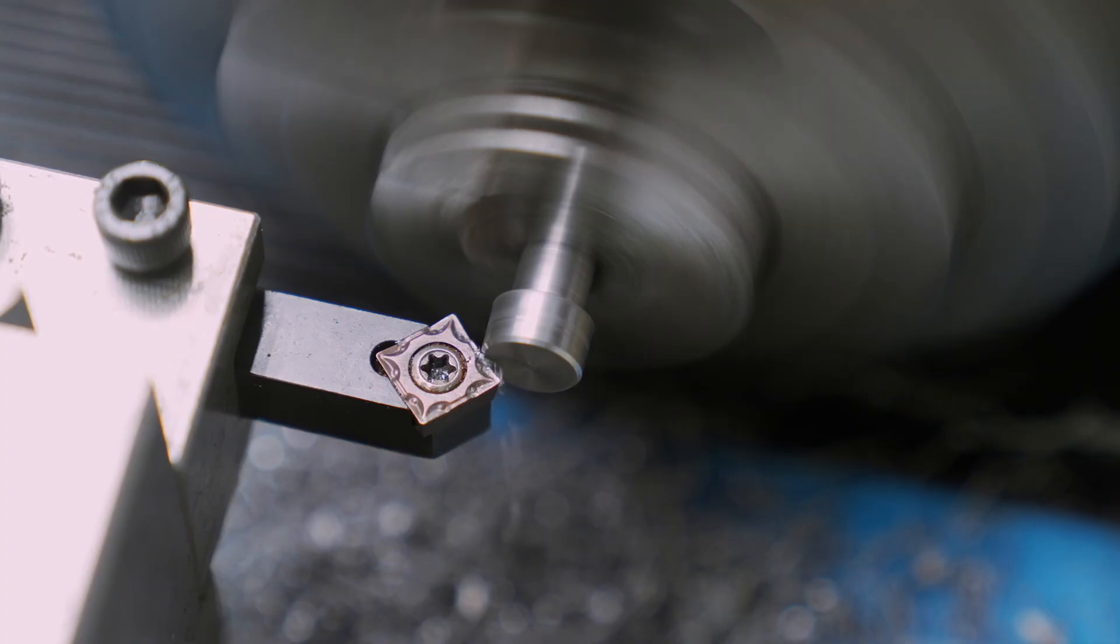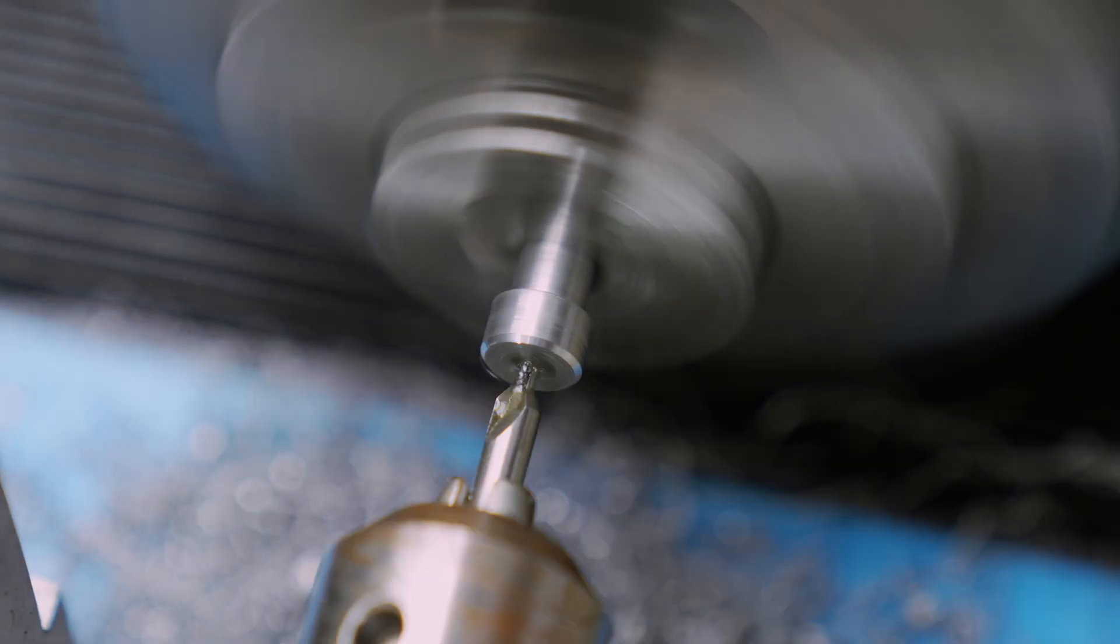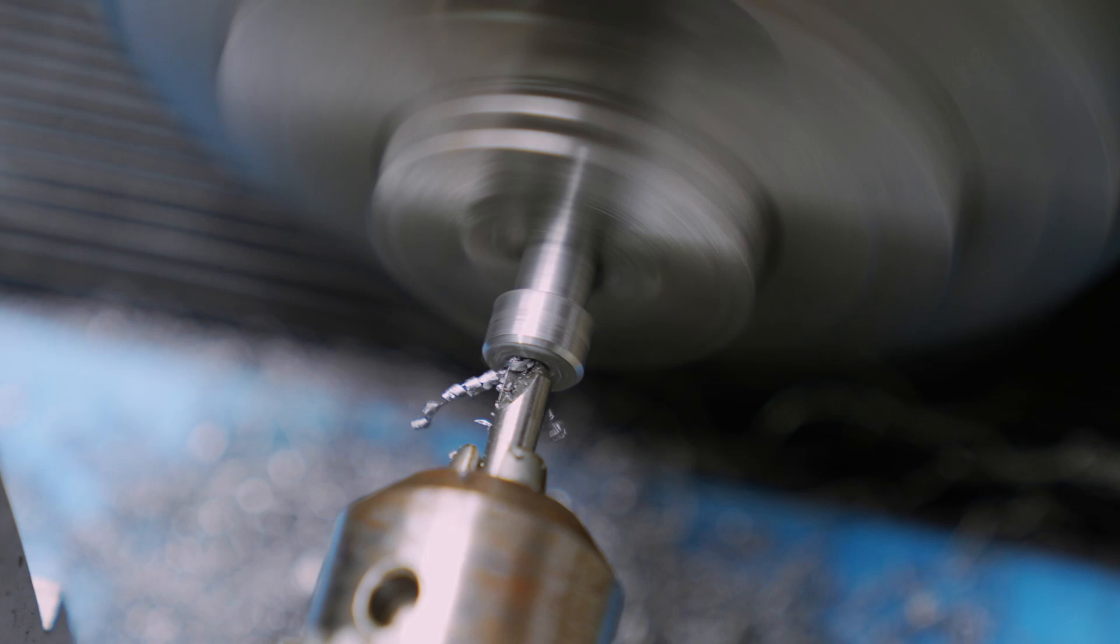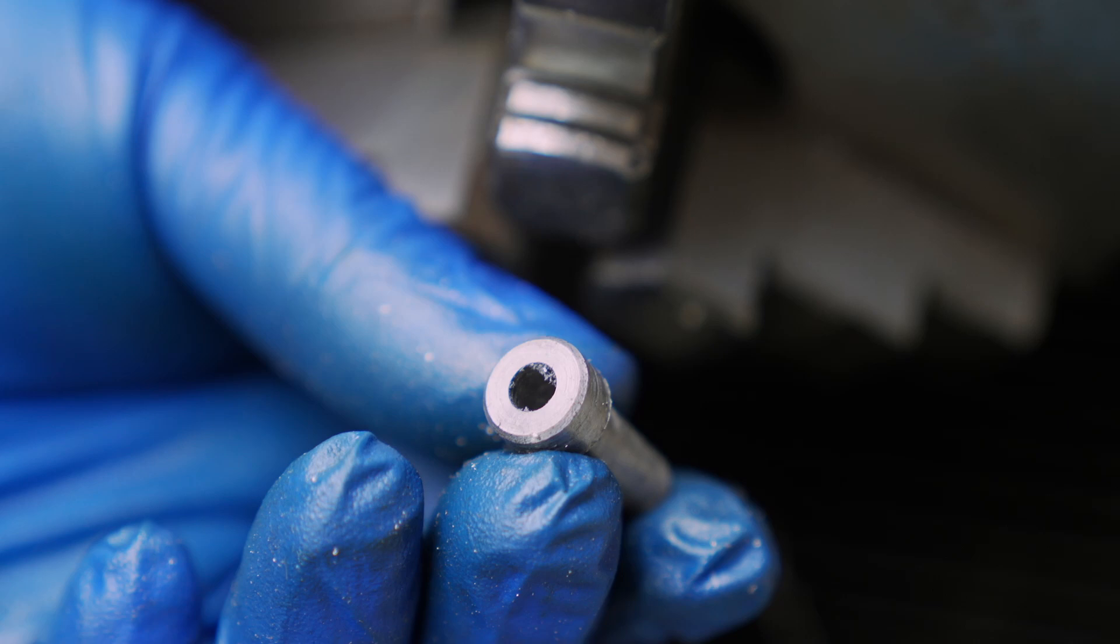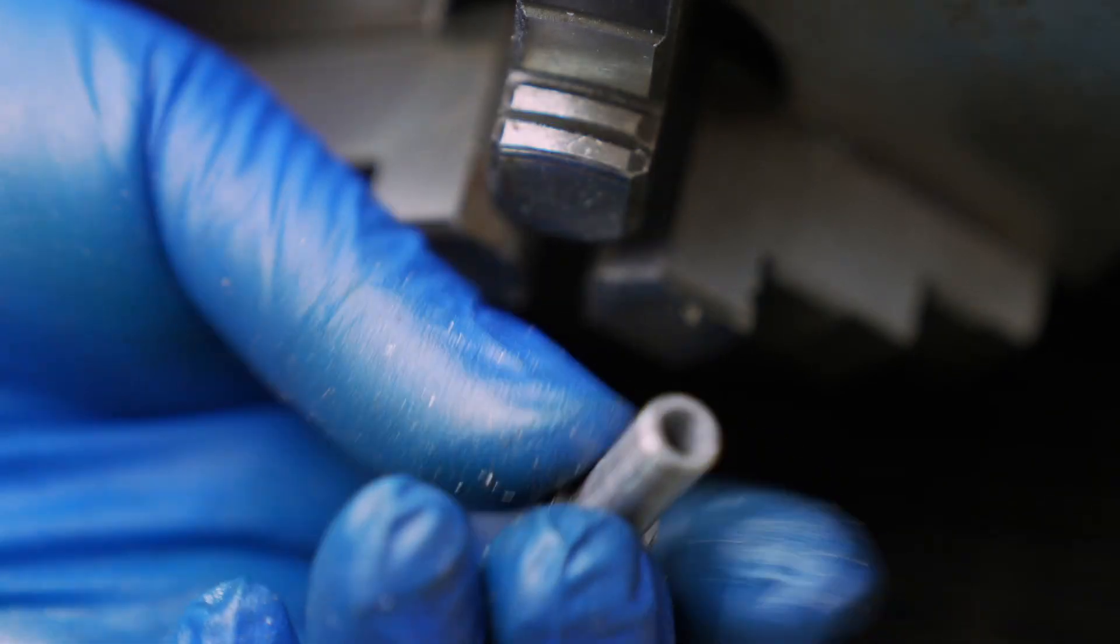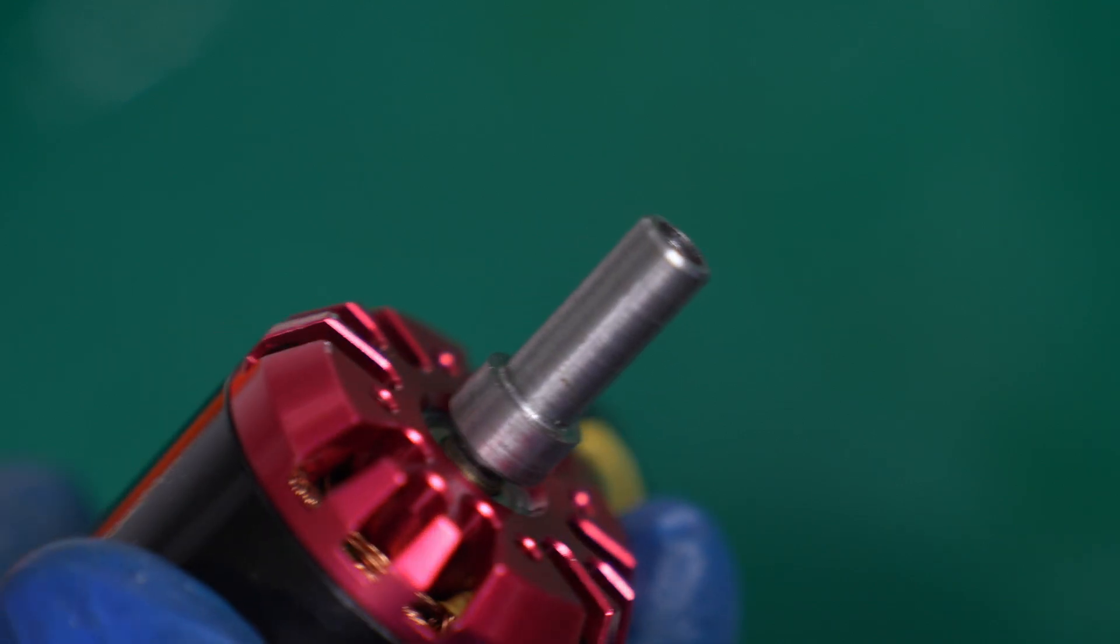Next, I'll machine the motor shaft hole. First, by drilling a center hole. Then, a through hole. The fit between the motor shaft and this hole is very smooth. But that's not my goal. I need a rigid connection between the two.